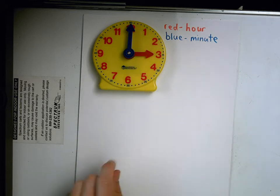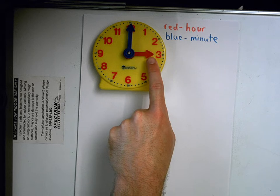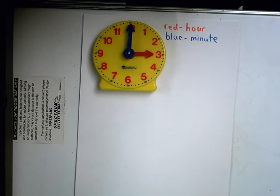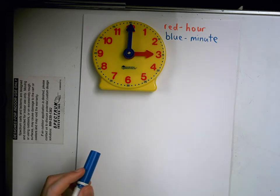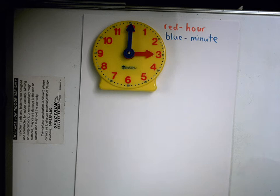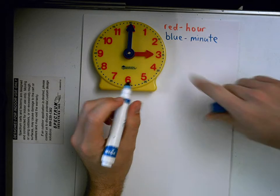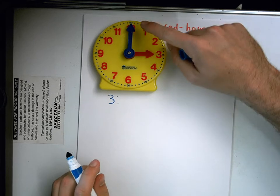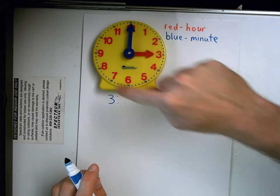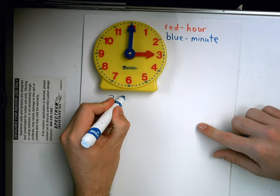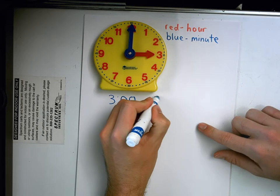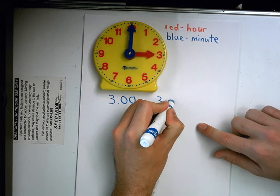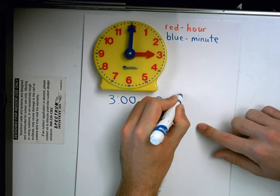So as I look right here, my hour hand is pointing to the three and my minute hand is pointing to the twelve. This time right here says three o'clock. Our hours are three and we're basically at the very top. There's been no minutes that have gone by in that hour yet. So it's zero or three o'clock.